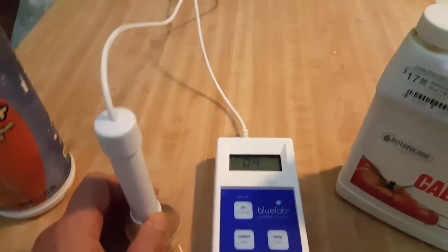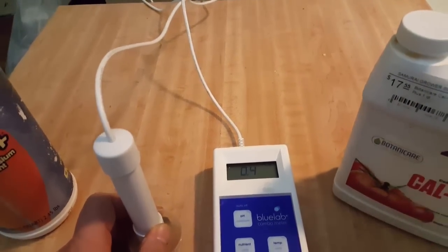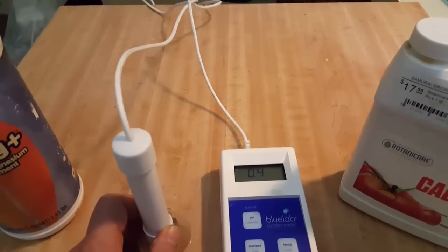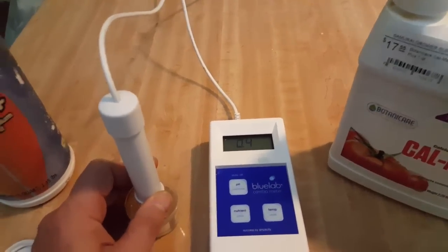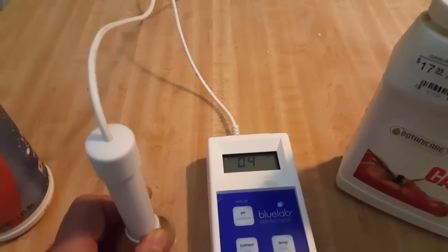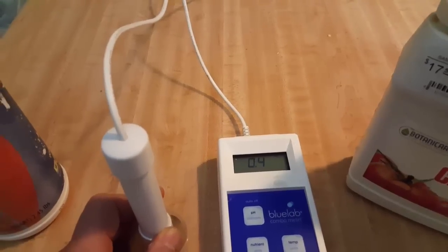How it works is it takes the electric conductivity, and then it does a mathematical equation. This is what a TDS meter does. So every TDS meter is doing electric conductivity. So there's no reason why it shouldn't have a setting on it that you can do both EC reading and electric conductivity.